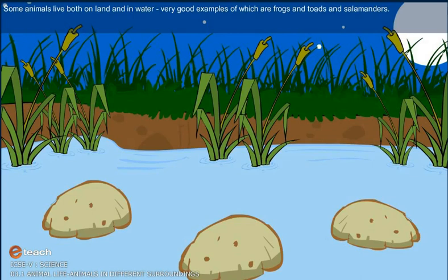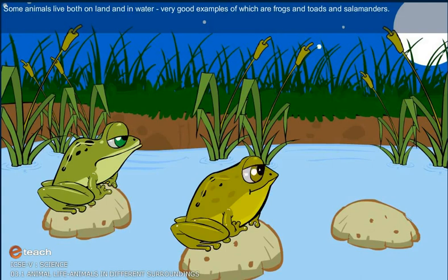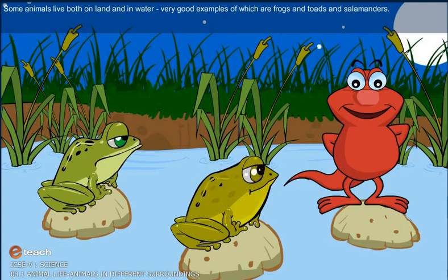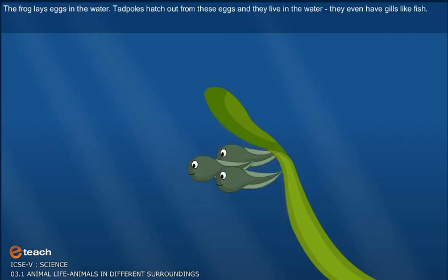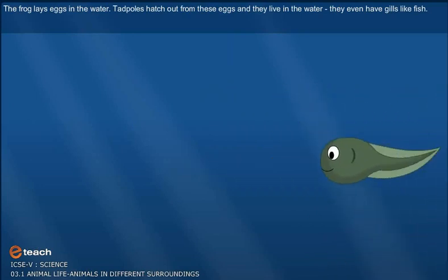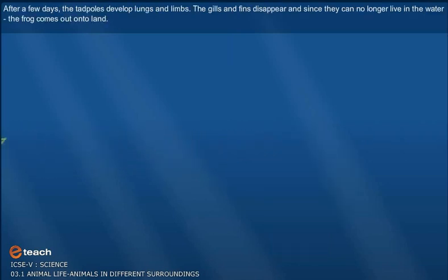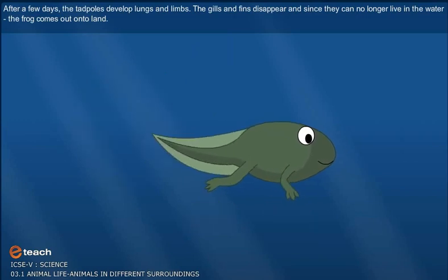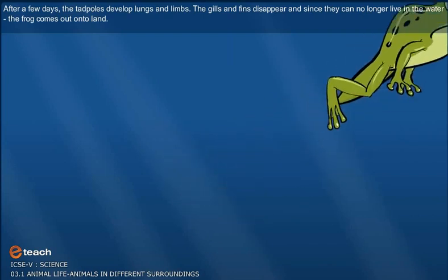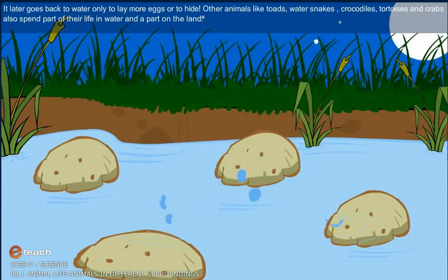Some animals live both on land and in water. Very good examples are frogs, toads, and salamanders. The frog lays eggs in the water. Tadpoles hatch out of these eggs and live in the water — they even have gills like fish. After a few days the tadpoles develop lungs and limbs, the gills and fins disappear, and the frog comes out onto the land.